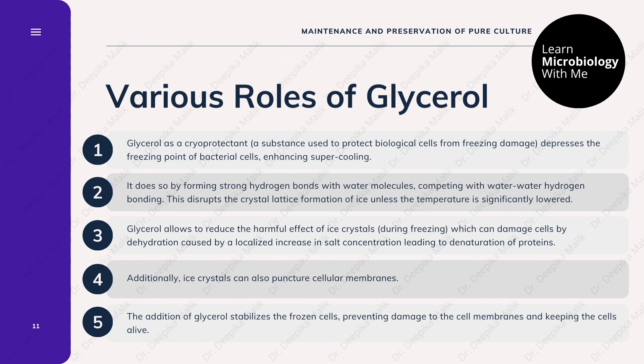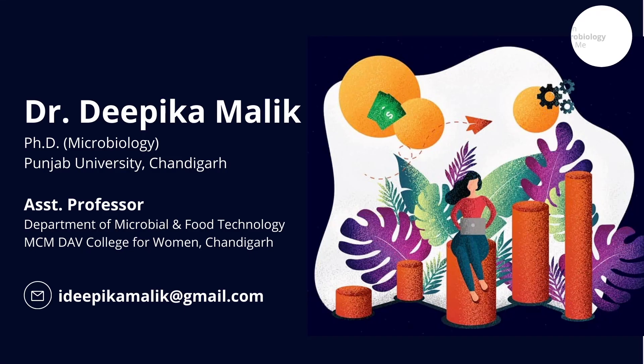In this way water is still available to the cells so that they can survive at low temperatures. Additionally, ice crystals can also puncture cellular membranes, so the addition of glycerol stabilizes the frozen cells, preventing damage to cell membranes and keeping the cells alive. By far we have learned two different methods — agar slants and glycerol stocks — that can be used in laboratories for preservation and maintenance of pure cultures. Both methods are simple to perform and very cost effective.